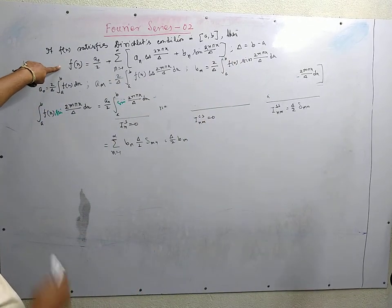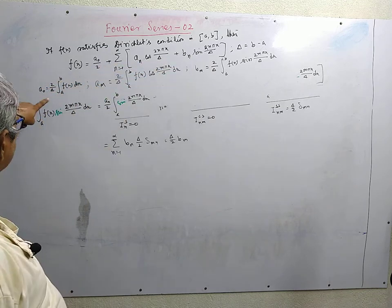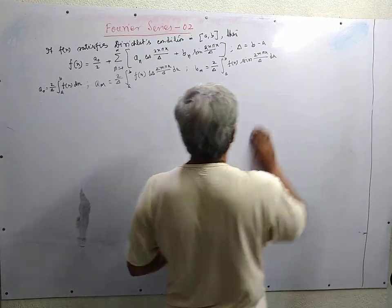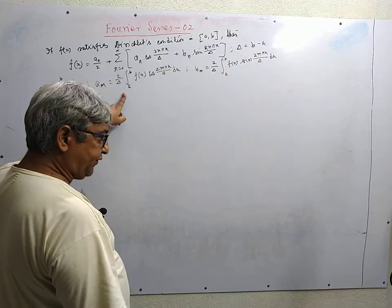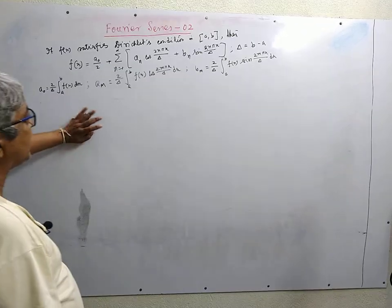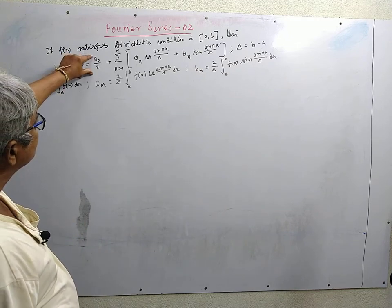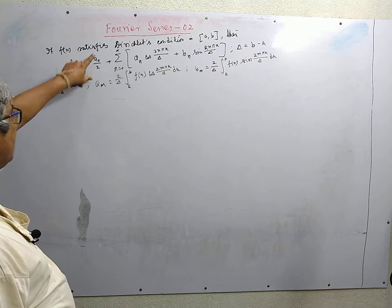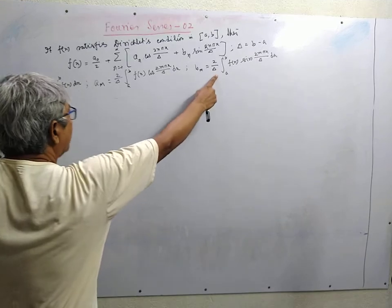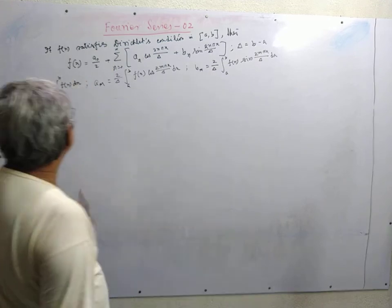This is the statement of Fourier series: functions satisfying Dirichlet's condition in a to b can be expanded in trigonometric Fourier series, where the expansion coefficients are given by these formulas known as Euler's formulas. The three expansion coefficients a0, a_m for the even part, and b_m for the odd part are determined unambiguously using the orthogonality condition. The use of a0/2 instead of a0 ensures the factor 2/delta appears consistently in every case.